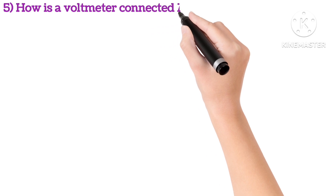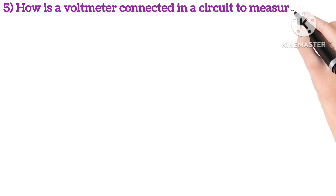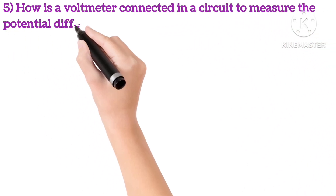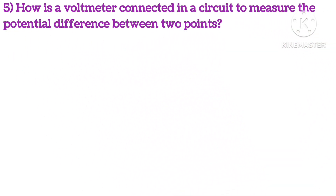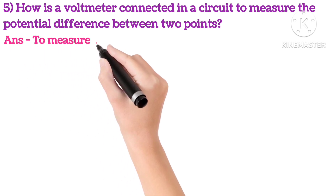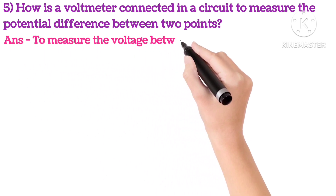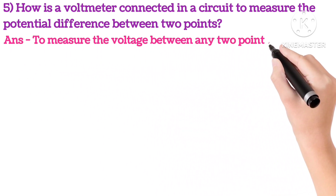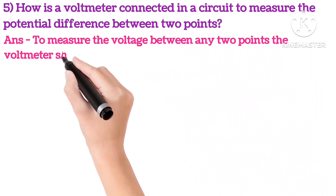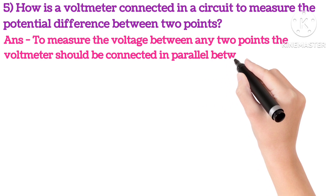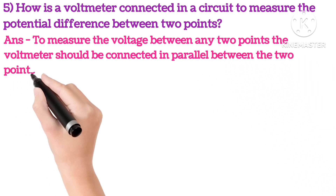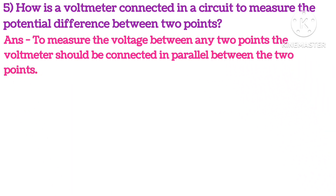How is the voltmeter connected in circuit to measure the potential difference between two points? Answer is: to measure the voltage between any two points, the voltmeter should be connected in parallel between the two points.